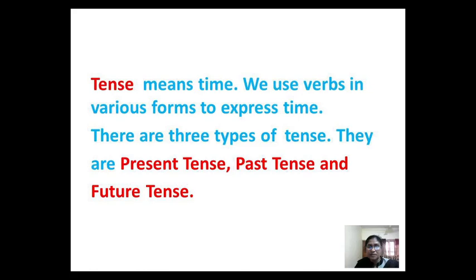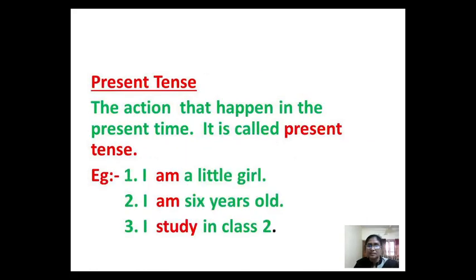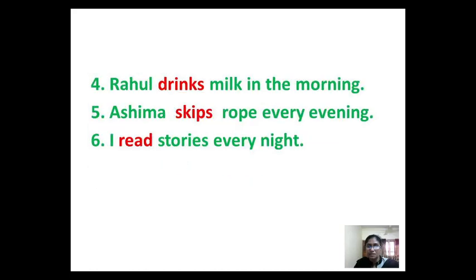Tense means time. We use words in various forms to express time. There are three types of tense: present tense, past tense, and future tense. The action that happens in the present time is called present tense. Example: I am a little girl. I am six years old. I study in class two. Rahul drinks milk in the morning. Ashima skips rope every evening. I read stories every night.